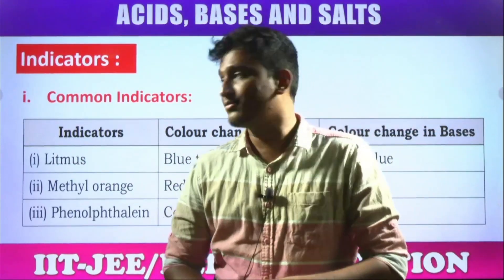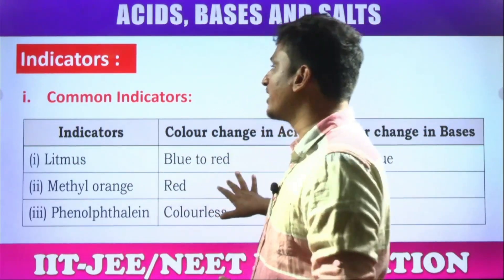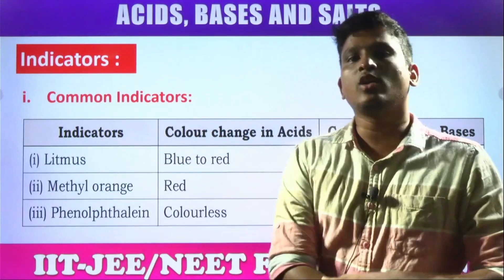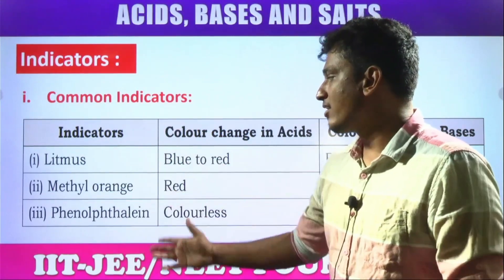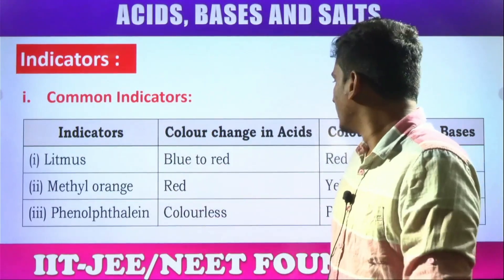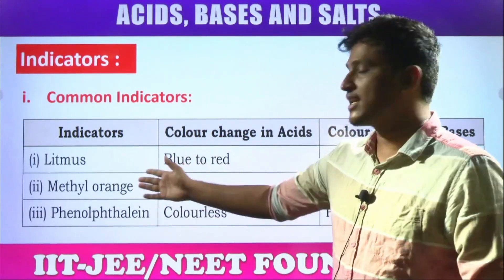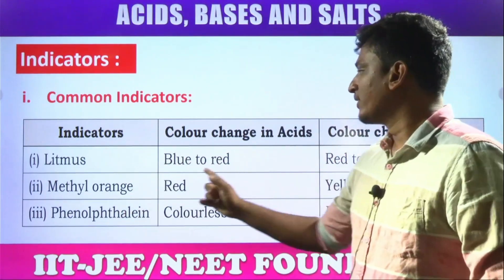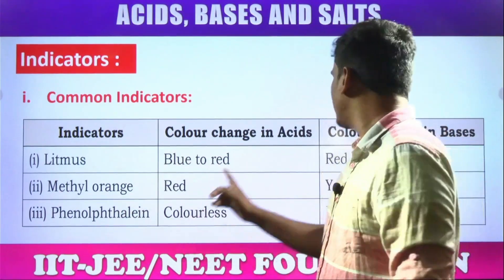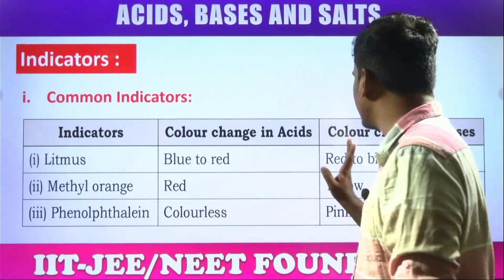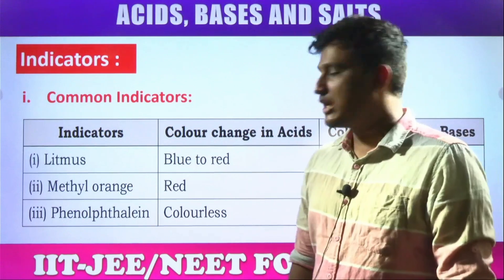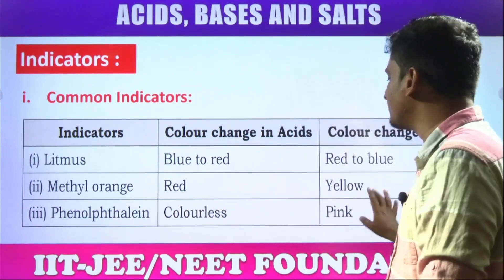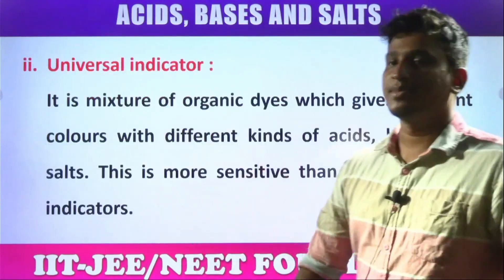Indicators: we have common indicators and the universal indicator. Common indicators are litmus, methyl orange, and phenolphthalein. In acids, litmus changes from blue to red; in bases, red to blue. Methyl orange is red in acids and yellow in bases. Phenolphthalein is colorless in acids and pink in bases.